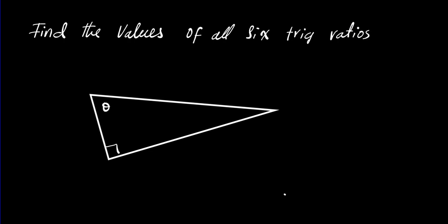Let's assume that we're given this right triangle. This is the 90 degree angle here and we have angle theta. Instructions are for us to find the values of all 6 trig ratios for the specified angle.